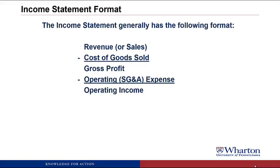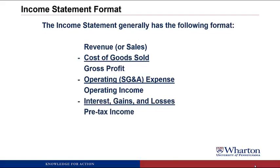Then we subtract operating or SG&A expense to get operating income. SG&A stands for selling, general, and administrative — these are all the period costs, all the other costs of running the business. Operating income is a picture of the profitability of the core business; it helps answer whether the company priced their product or services high enough to cover all the product and period costs. After operating income, we subtract any interest expense or interest income, and then adjust for gains or losses. Gains or losses are like revenues or expenses except they don't come from your core business. After those adjustments, you get pre-tax income. Then you subtract income tax expense to give you bottom-line net income, also called earnings or net profit.